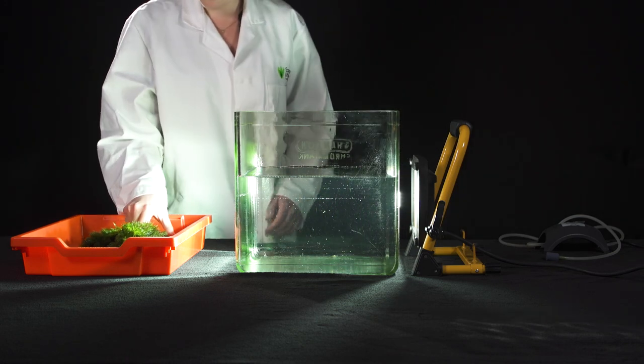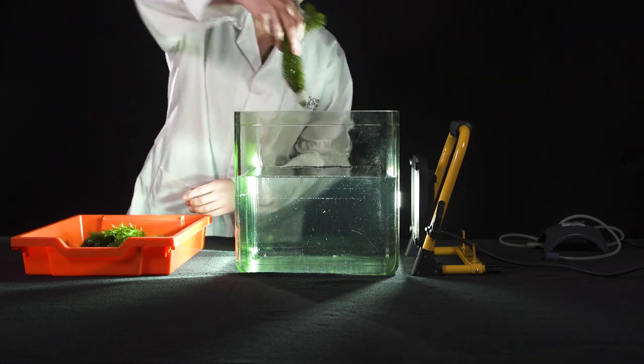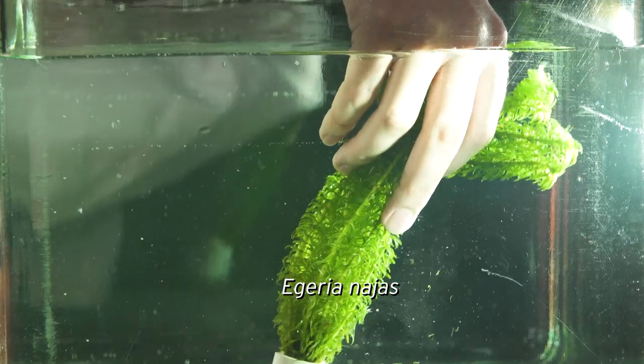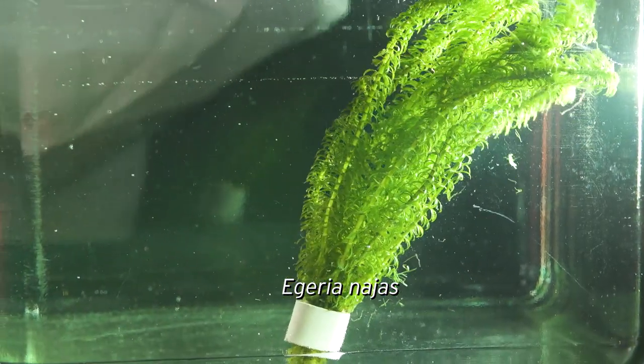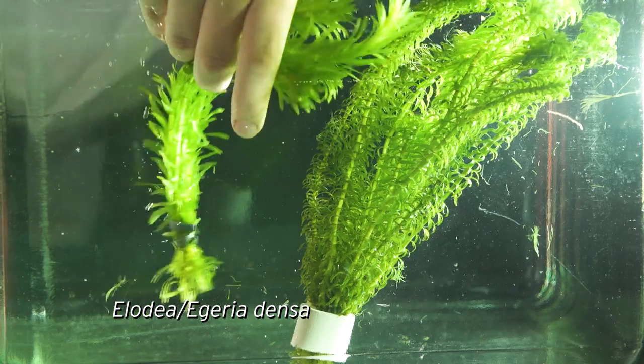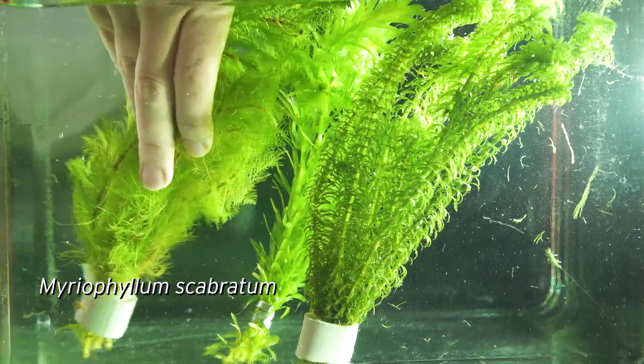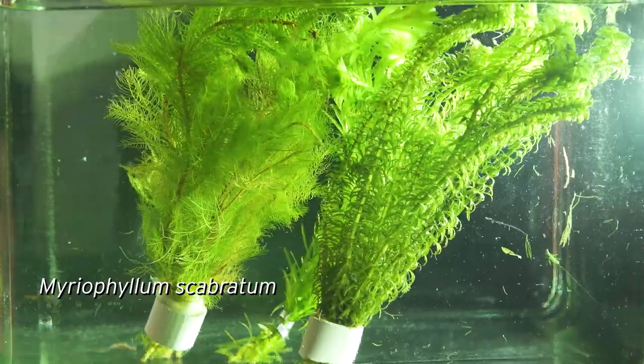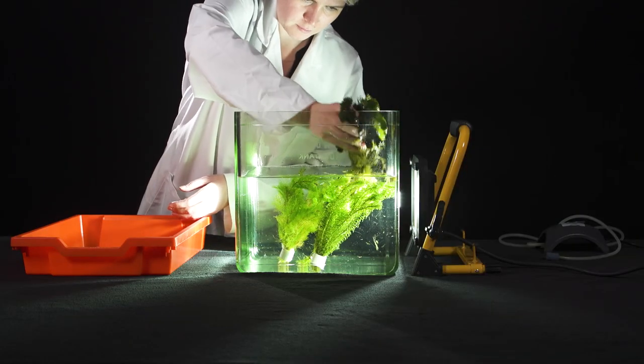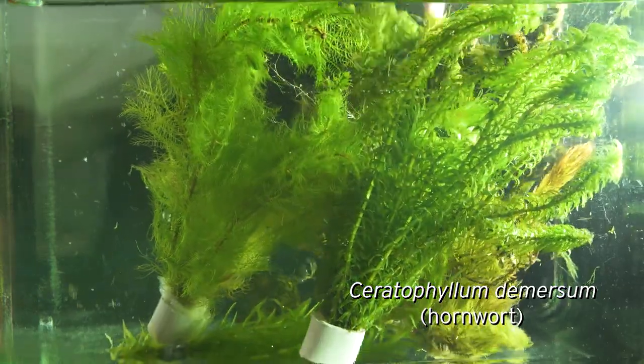Temperature is important when your pondweed first arrives in the lab as well. Many of the species we use are tropical, so plunging them into a tank of cold tap water will cold shock them. Tap water is fine to use, but allow the tank to come to at least room temperature, or even slightly warmer, before placing the pondweed into it. Also make sure that the tank is aerated.